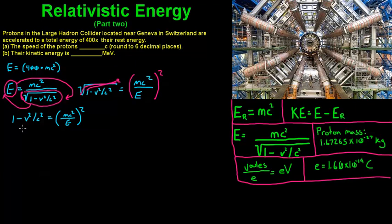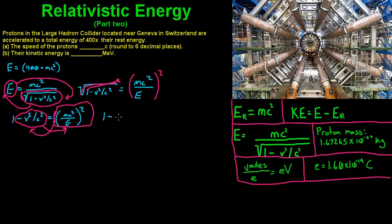Now, you might be tempted to just subtract that 1 and multiply by c, then square root, but when you do it that way you can get a negative answer. The way around that is to first add the v²/c² term to the other side, and subtract the (mc²/E)² term from this side. That leaves you with 1 minus mc²/E all squared is equal to v²/c².